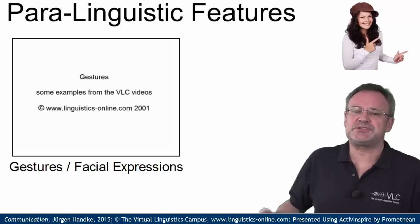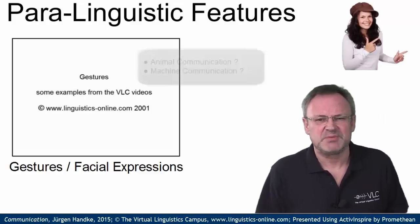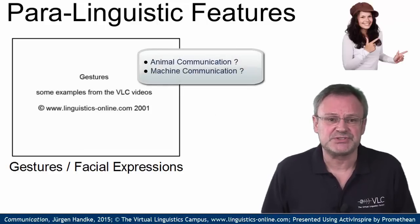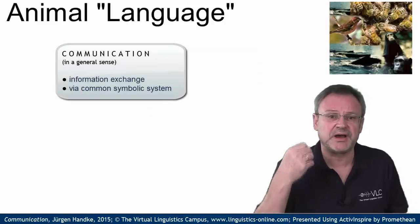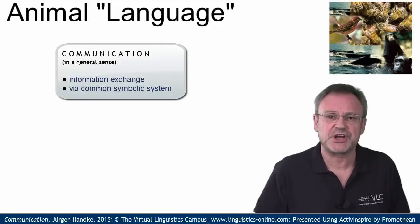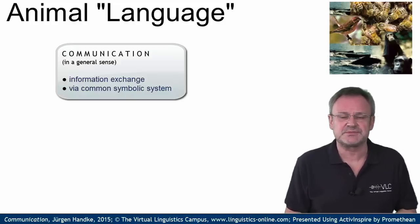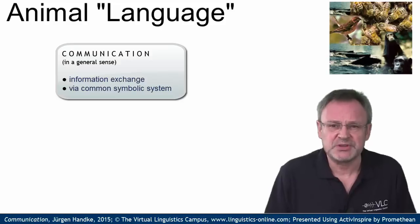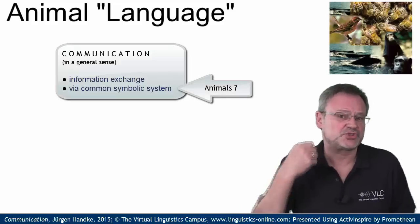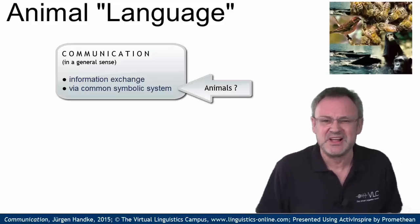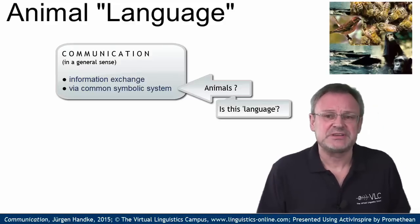Let us now return to the question we raised earlier on. There is no doubt that humans communicate, but what about animals or even machines? Communication can be defined as a process whereby ideas, information and messages are shared with others in a particular time and place through a common system of symbols. This definition is crucial because, as we saw, animals have a symbolic system — they have songs, dances, instinctive noises, etc. But is this any sort of language? For the linguist, it is not.